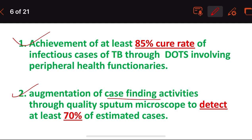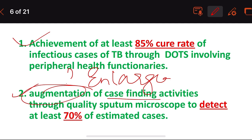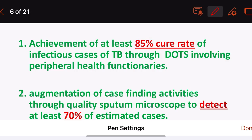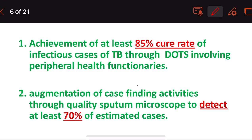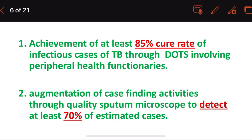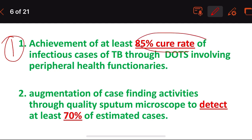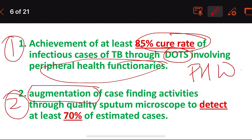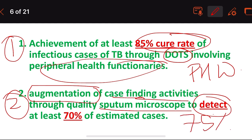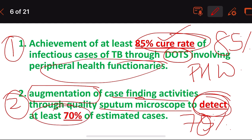The second objective is augmentation of case finding — improving the capacity of case-finding activities through quality sputum smear microscopy to detect at least 70% of estimated TB cases. So the two main objectives are: 85% cure rate using DOTS with peripheral health workers, and detecting 70% of cases using sputum microscopy.